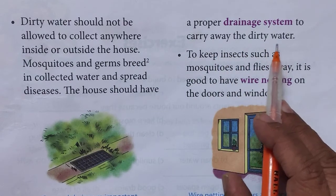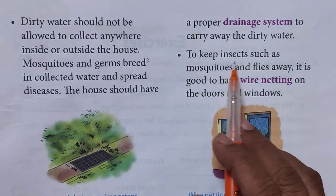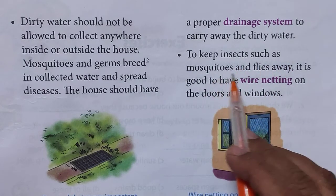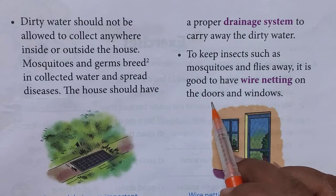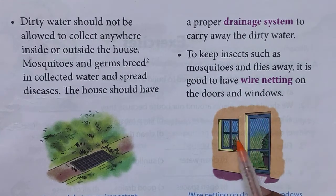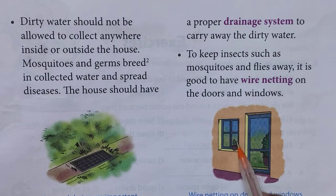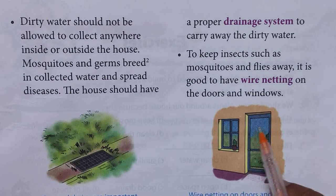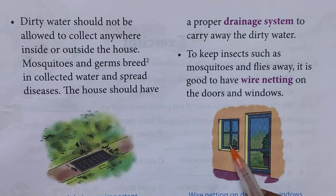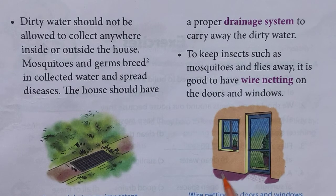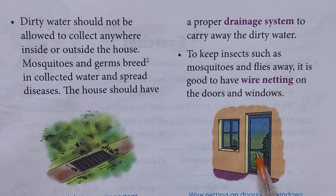To keep insects such as mosquitoes and flies away, it is good to have wire netting on the doors and windows. See the picture — the doors and windows have netting around them, which traps mosquitoes and prevents them from entering the house. Wire netting on doors and windows is very essential to stop mosquitoes.